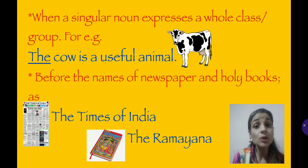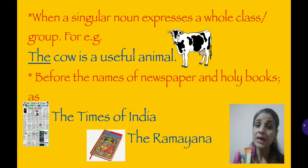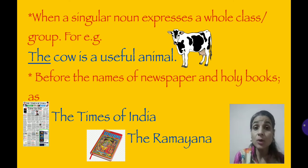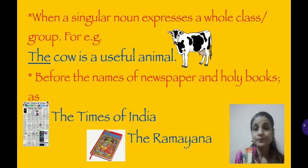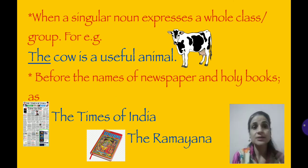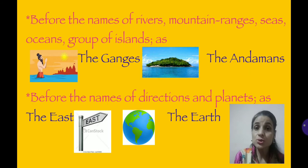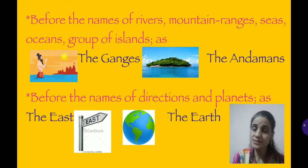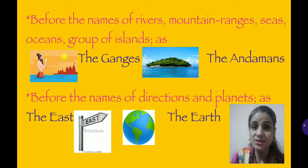Next rule: when a singular noun expresses a whole class or group — when it represents the whole group — we use article 'the'. For example, 'the cow is a useful animal.' Here 'cow' refers to all cows — the whole group of cows is useful. We can't say one cow is useful and others are useless. So we use 'the', not 'a'. Next rule: before the names of newspapers or holy books — the Times of India, the Ramayana, the Quran. Next rule: before the names of rivers, mountain ranges, seas, oceans, group of islands, etc., we use article 'the'. For example, the Ganges, the Anvans.